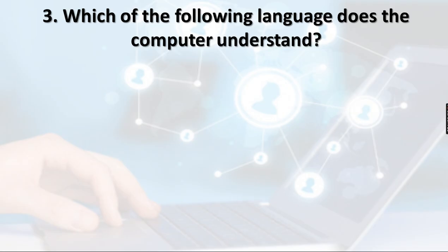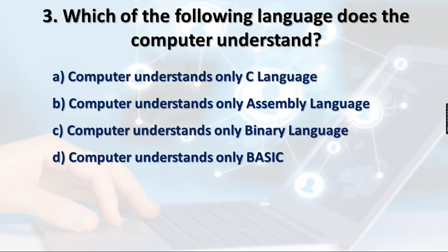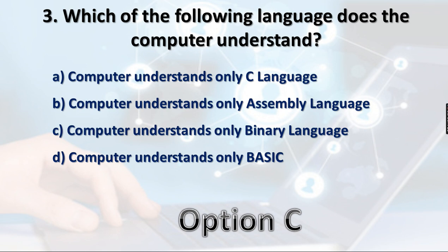Question 3: Which language does the computer understand? When we input data into a computer, which language does it understand? Option A: only C language, Option B: only assembly language, Option C: only binary language, Option D: only BASIC. The computer's language is binary — it only understands 0 and 1, and works on 0 and 1 bits. Therefore option C is the right answer: the computer understands only binary language.